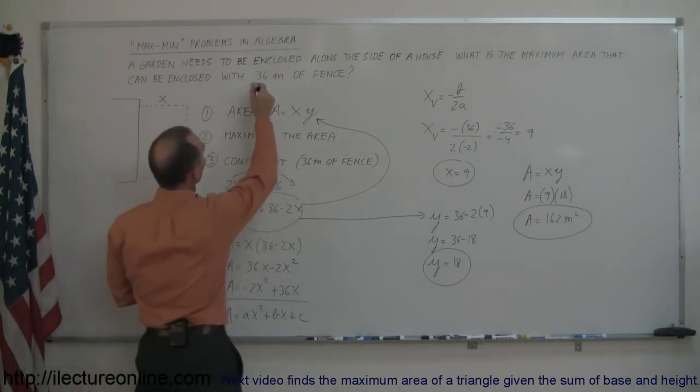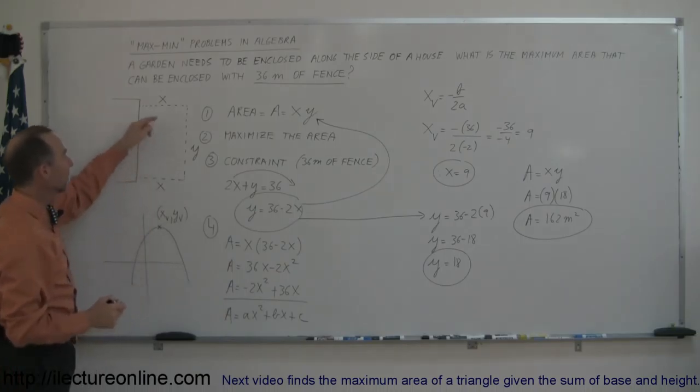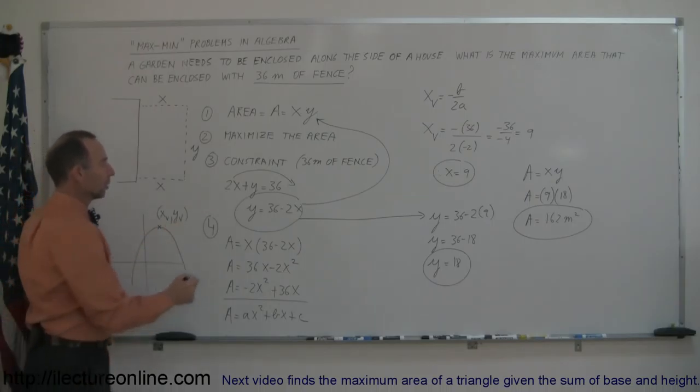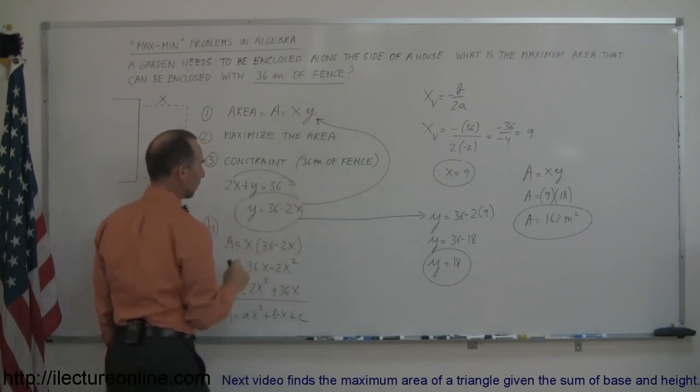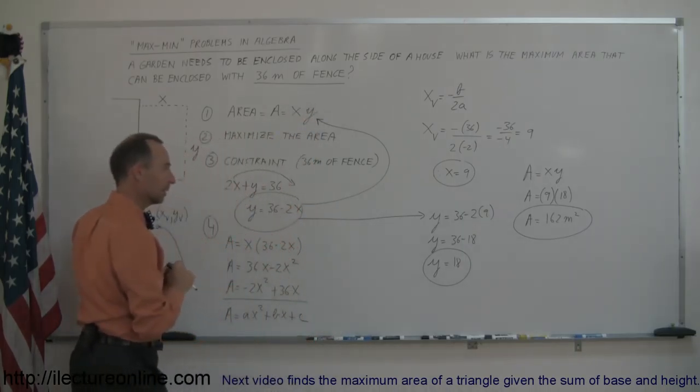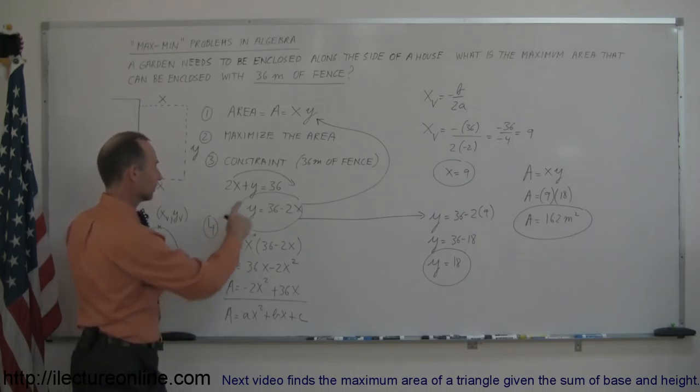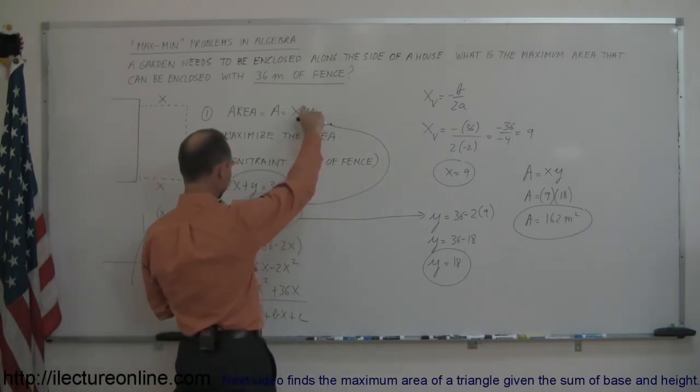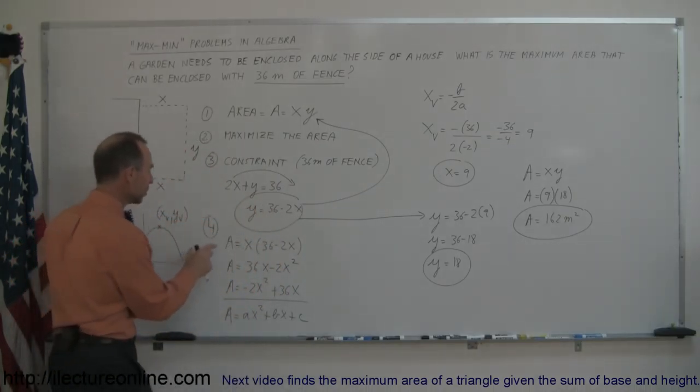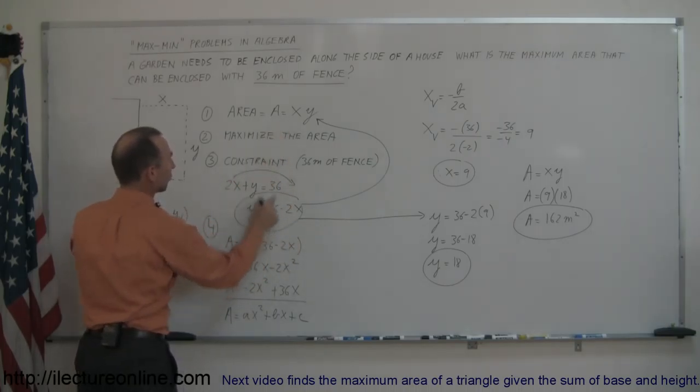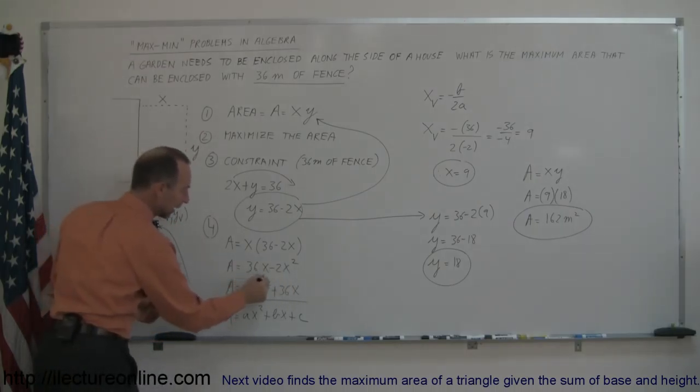In this case, you're trying to maximize the area, and then you need to come up with a constraint, some sort of relationship between the two variables, so you can eliminate one of the variables. The constraint here was that you only had 36 meters of fence. Looking at the drawing, that means that x plus y plus x cannot be any bigger than 36, so 2x plus y is your constraint. You solve that for y, plug that back into your original equation for the area, so then you end up with just an equation, and now you can see that you have a quadratic equation.